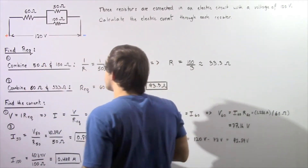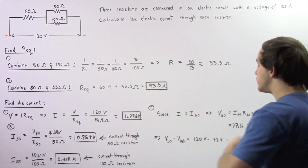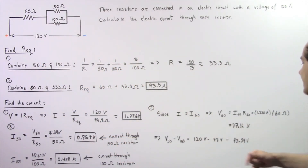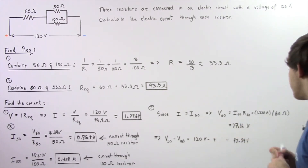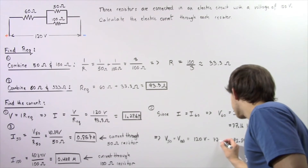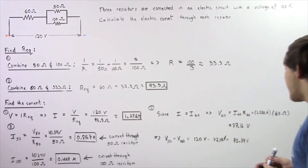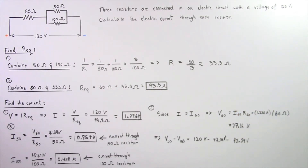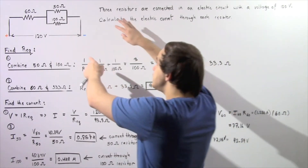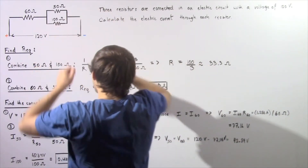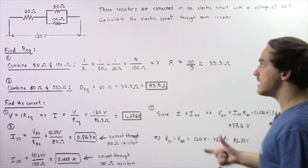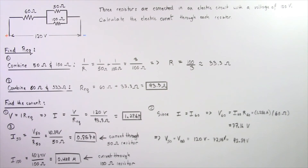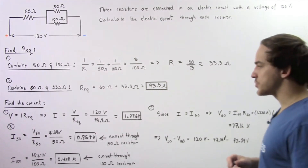To calculate the voltage across the two parallel resistors, we simply take 120 volts and subtract 77.16 volts, which gives us 42.84 volts. Because these two resistors are in parallel, the voltage across both of them is exactly the same — equal to 42.84 volts.